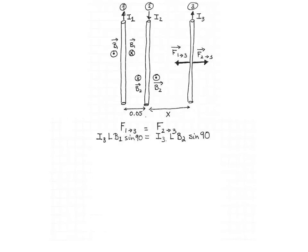That allows us to write: I₃ L B₁ sin 90° = I₃ L B₂ sin 90°. This simplifies — there's I₃ on both sides, there's the length L on both sides, and the angle between I₃ and B₁ is the same as the angle between I₃ and B₂. So finding the place where the two forces cancel is equivalent to finding the place where the two magnetic fields cancel.